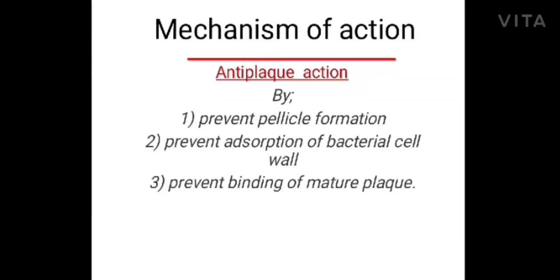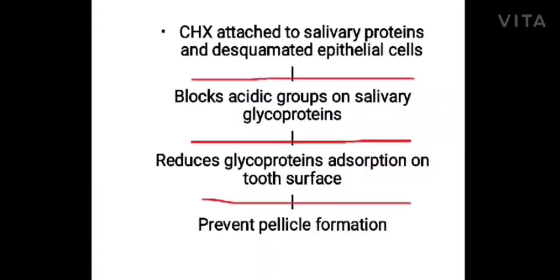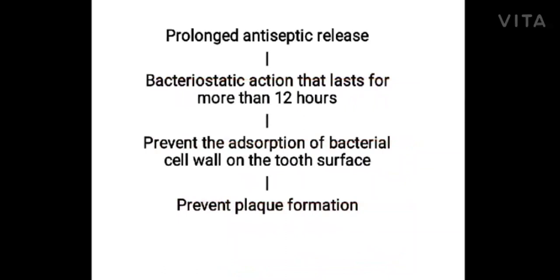Mechanism of action through which chlorhexidine works. Anti-plaque action can be achieved by: preventing pellicle formation, preventing absorption of bacterial cell wall, and preventing binding of mature plaque. First, chlorhexidine attaches to salivary proteins and committed epithelial cells, blocks the acetic group on salivary glycoprotein, reduces glycoprotein absorption on tooth surface, prevents pellicle formation and acts as an anti-plaque agent.